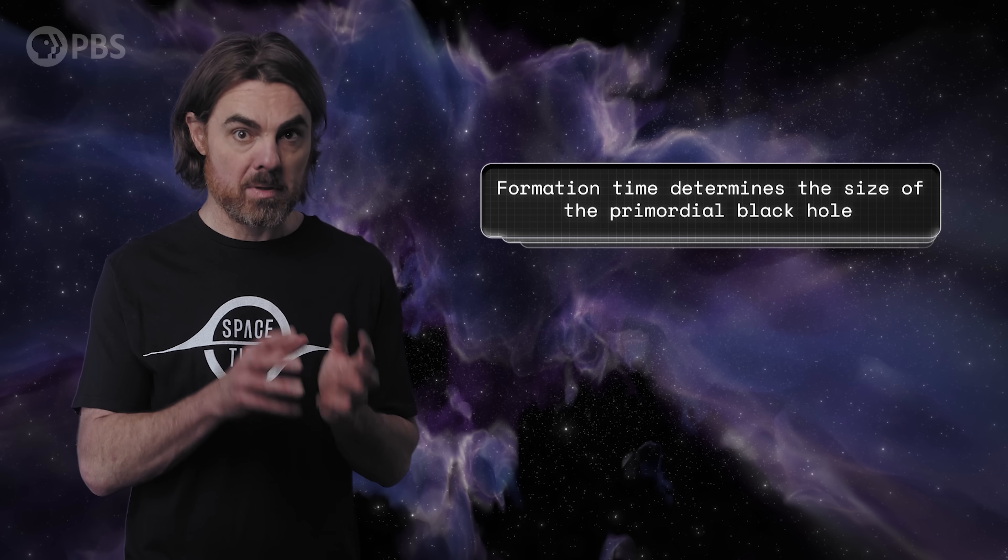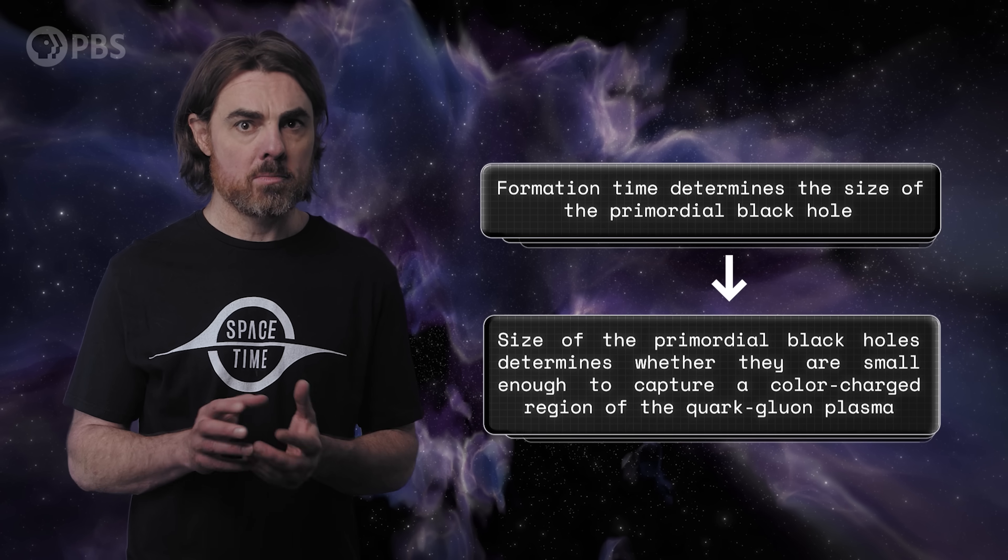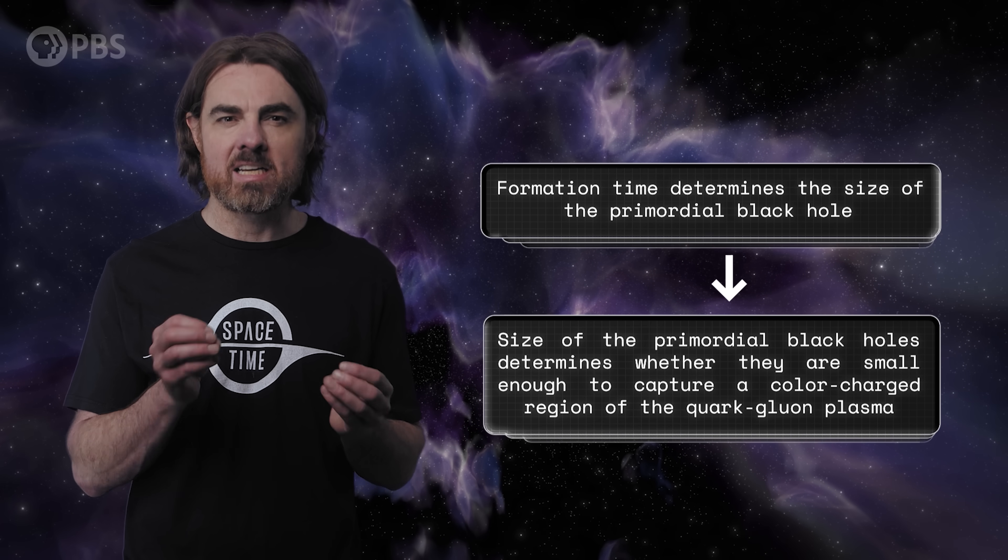Although the net color charge of this plasma was zero, if you zoom in close enough on little patches you would find regions that are randomly a bit more of one color than the others. And if such regions are dense enough to collapse into a PBH, that would give us our color charged black hole. So the scientists behind this new study wanted to figure out whether these color charged black holes might exist, and in what quantities. To determine that, they first needed to know when these things formed. Remember, it's the formation time that determines the size of the PBHs, and the size of the PBHs determined whether they are small enough to capture one of these tiny color charged regions in the quark-gluon plasma.